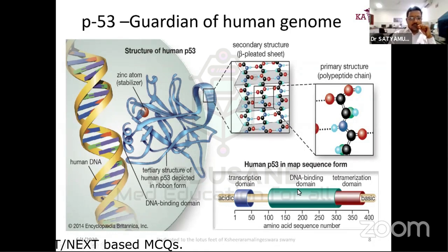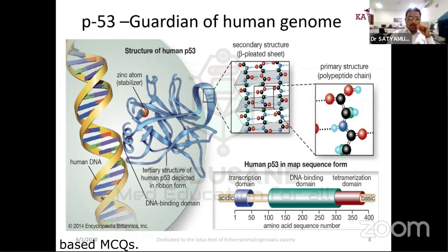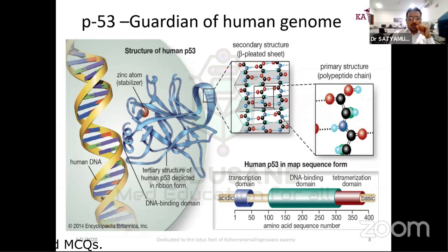p53 is commonly known as the guardian of the human genome because 50% of cancers in the human body carry a p53 mutation. Regarding treatment, radiotherapy is more effective on tissues where p53 is active; tissue with less p53 activity does not respond well to radiotherapy. So p53 is very important in both diagnosis and prognosis. The p53 product has a DNA-binding domain, transcription domain, and basic domains, and contains approximately 400 amino acids.